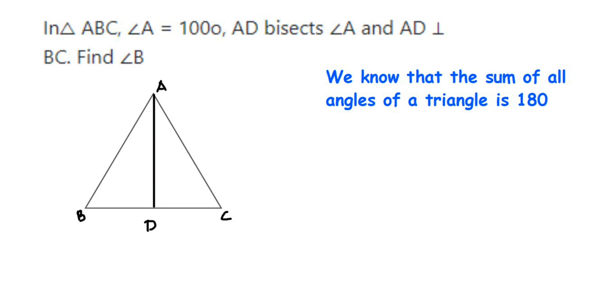Hey everyone, here is a question on triangles. The question is: In triangle ABC, angle A is 100 degrees. This small circle you see indicates degrees, so angle A is 100 degrees.